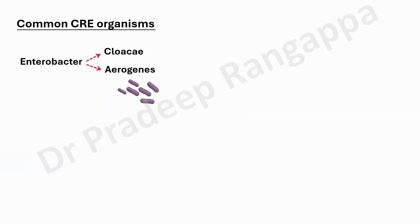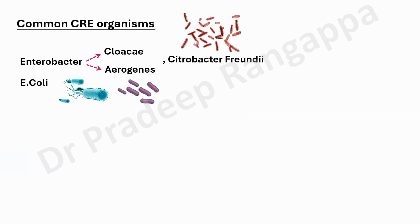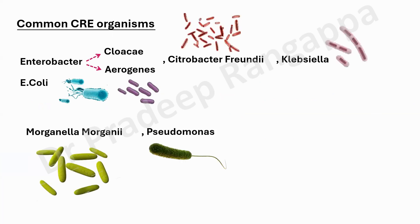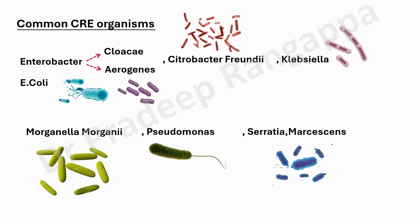Just to recapitulate, the common CRE organisms which we all should know are: Klebsiella, Enterobacter, Klebsiella aerogenes, E. coli, Citrobacter, Klebsiella, Morganella, Pseudomonas, and Serratia. Please remember these organisms — these are the typical ones. Right now as I'm speaking, I have one patient in ICU with Serratia, which is a CRE organism. They tend to produce carbapenemases and show resistance to multiple groups of antibiotics.